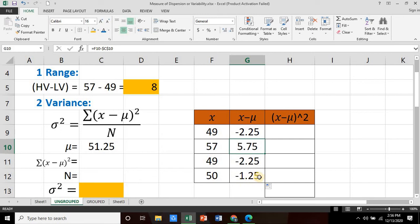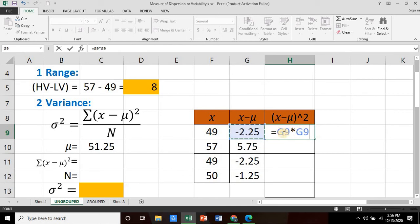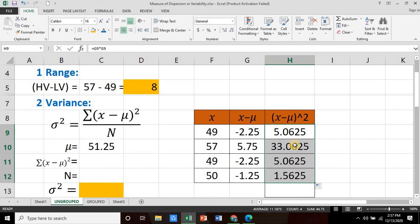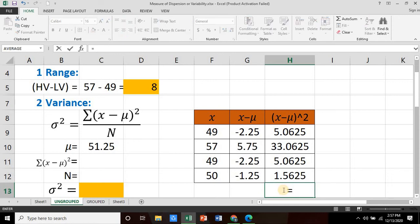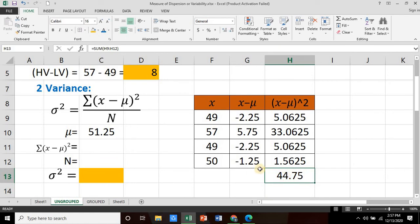We simply square this value that is equal to itself, G9 multiplied to G9. So we now have our value which is 5.0625. We simply copy the formula or apply the same formula. And to get the summation of these four below it, we simply take the sum, that's equals SUM, open parenthesis, highlight these values, and press enter. So we have a summation of 44.75.